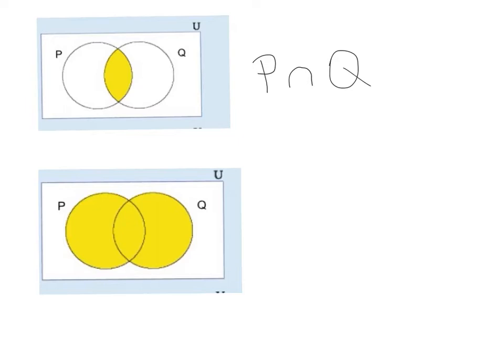Don't forget to take the questions down, write down the answers, and draw the diagram properly. Looking at the next one: all of P and all of Q is shaded in yellow, so this is union. The symbol for union gives us P union Q, and this is the answer. Take it down please.